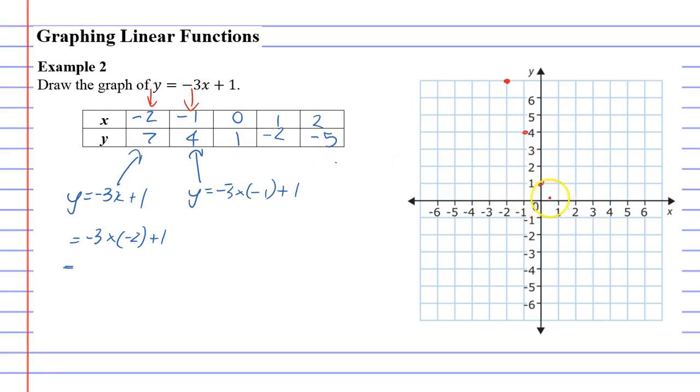1, negative 2, and 2, negative 5. And it looks like it's forming a nice straight line.